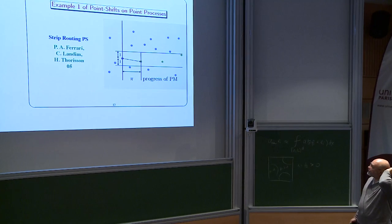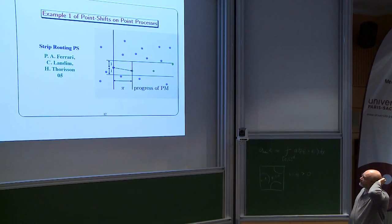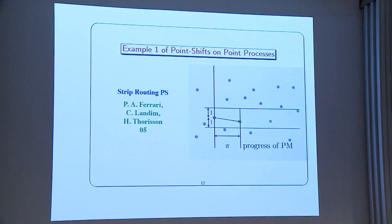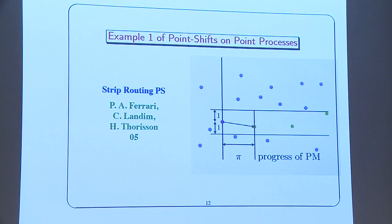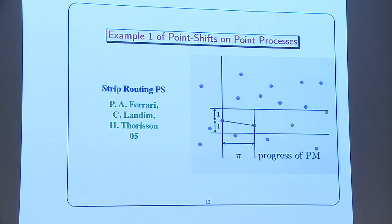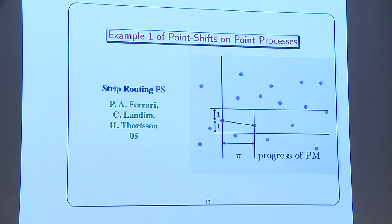Here are a few examples. The first is the strip point shift, introduced by Ferrari, Landim, and Thorisson. You take a typical point at the origin, do a strip of width 2 centered on that point, look at the first point in this strip — that's the green point — and that's where you go. You iterate, leading to trajectories. The second is the directional point shift: you expand the ball centered here until you hit a point on the right half-plane, and iterate.